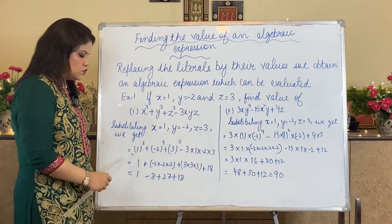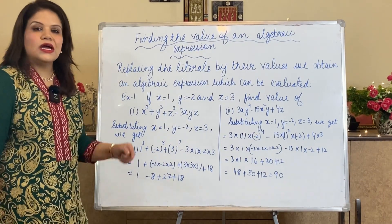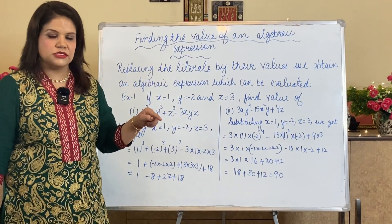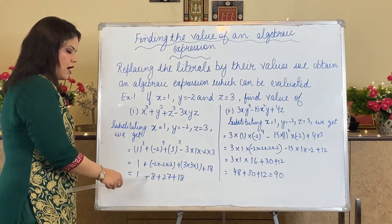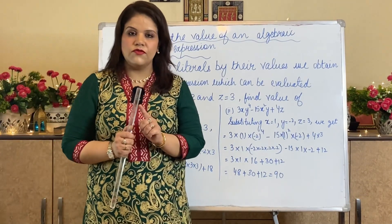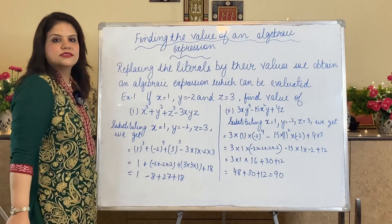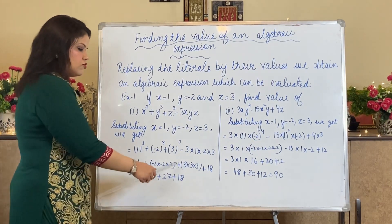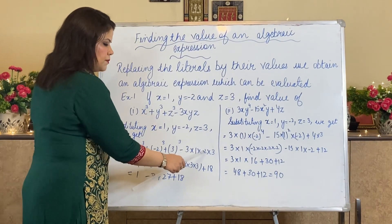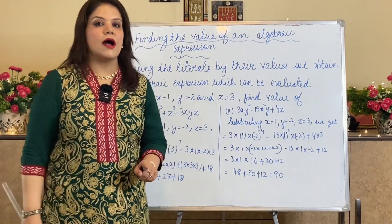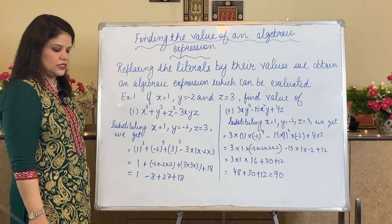Now, 1³ = 1. For (-2)³: minus multiplied by minus gives plus, but that plus multiplied by the third minus 2 gives minus, so (-2)³ = -8. For 3³: 3 × 3 × 3 = 27. For the last term, -3 × 1 × (-2) × 3: the two minus signs multiply to give plus, so 3 × 1 × 2 × 3 = 18, making it +18.